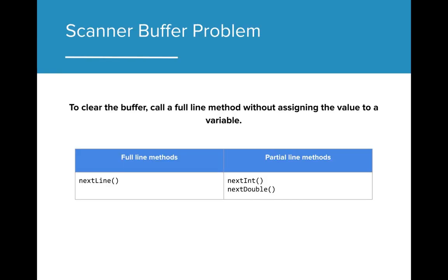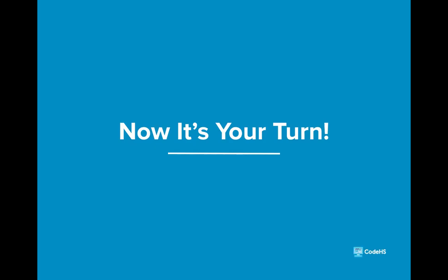Remember that nextInt and nextDouble are both examples of partial line methods that will leave a buffer at the end. Adding a nextLine call without assigning it right afterward will fix this issue. Now that you've learned about user input, let's get some practice in the editor. We'll see you later.